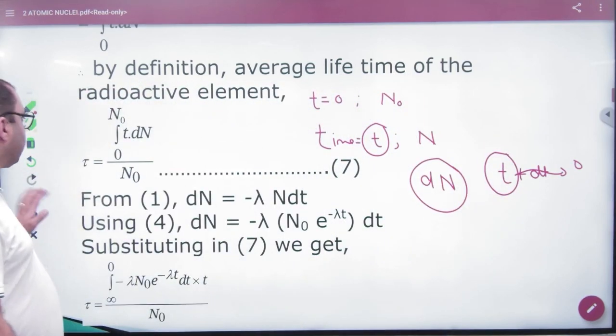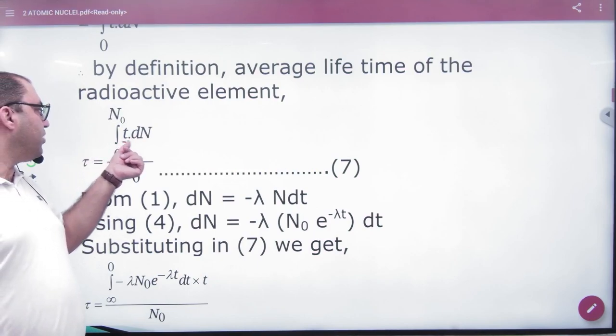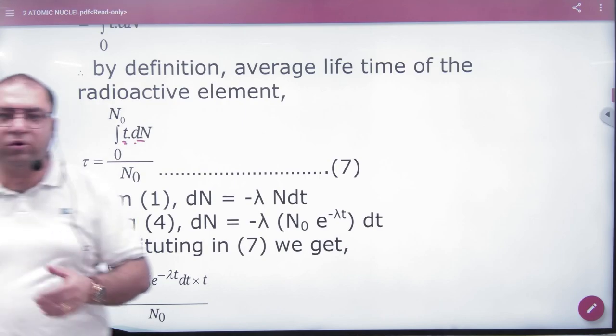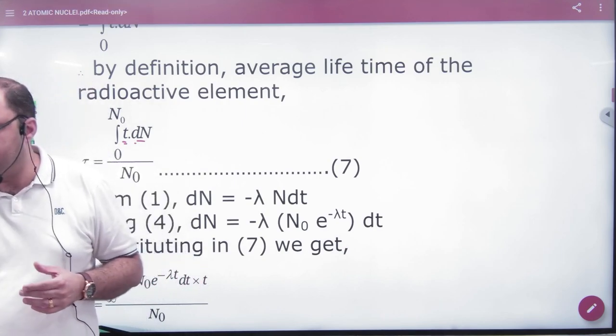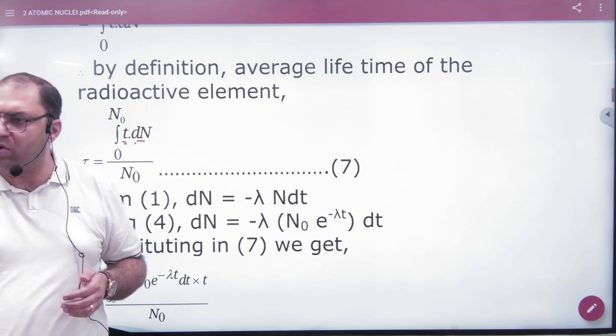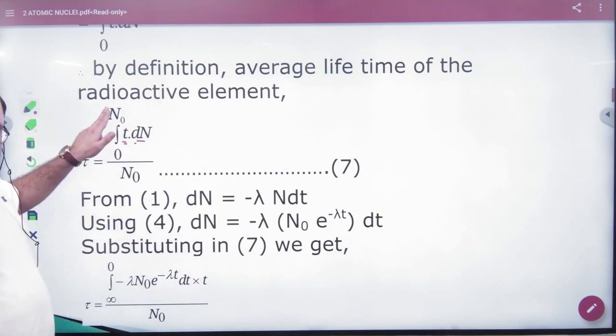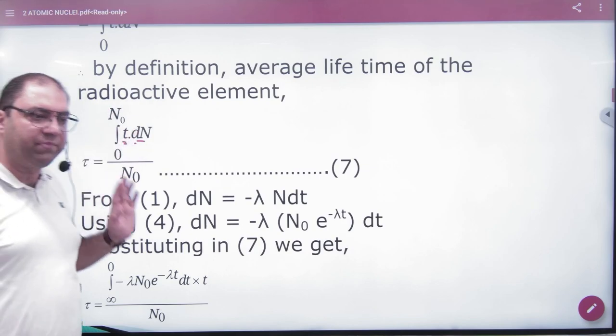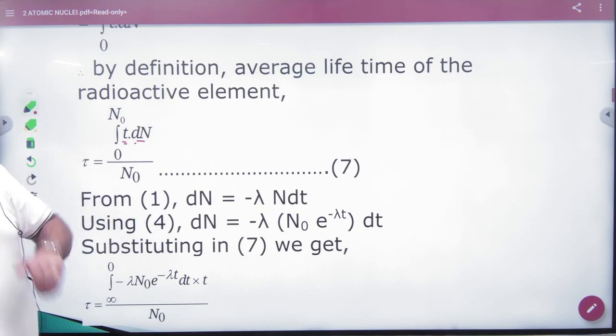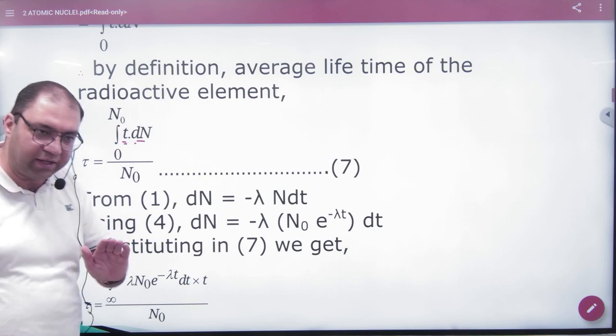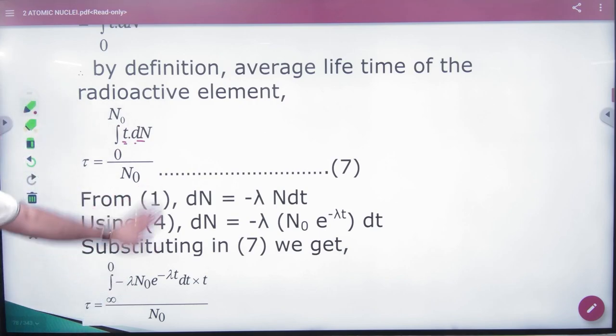So what will calculate total age? T is age, dN's age. T and dN's age will multiply. Because what will I do? dN's age will multiply and I will integrate. Where to where? N limit is zero to N₀. But the problem is that it has time and number of atoms. So if I divide it from the total number of atoms, the number of atoms will cancel. I will have time. So you don't have to do anything.